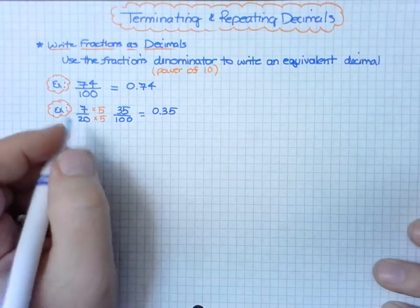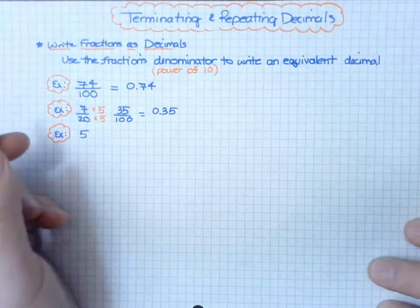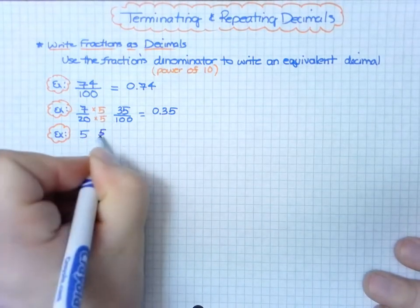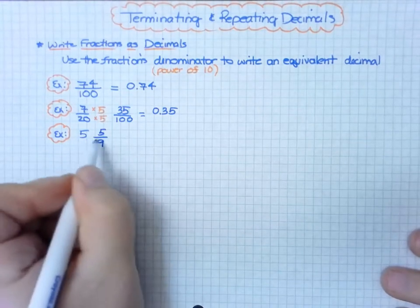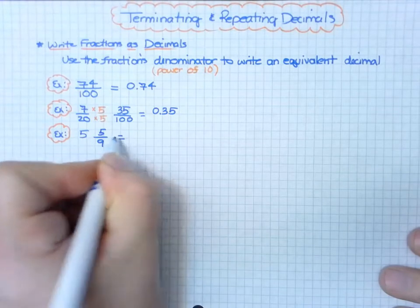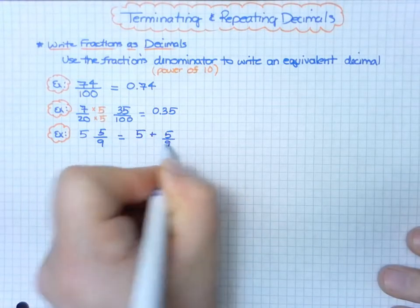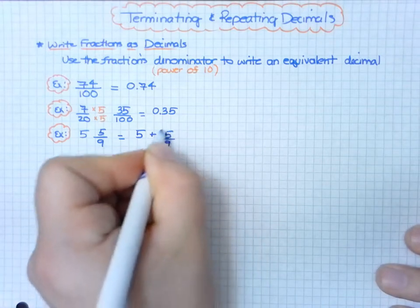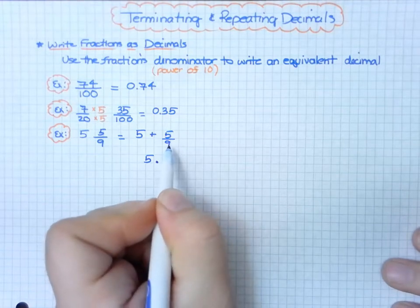Another example: 5 and 5/9. This is a mixed number which I can separate into its whole number and fraction. The whole number goes before the decimal place, so we just need to figure out how to make 5/9 a decimal. Again, I might need to find a power of ten.